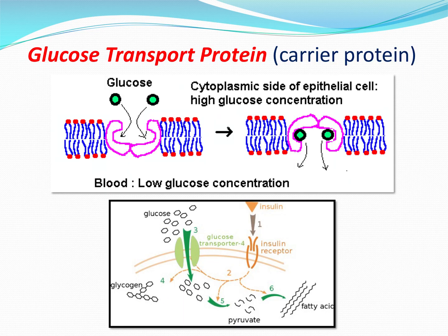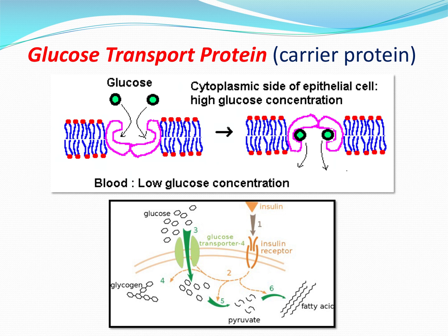An example of a carrier protein is how glucose moves through. Glucose is a bigger molecule — a type of macromolecule — so it moves through with a carrier protein, like a drawbridge. The protein channel is open to the outside, the glucose comes in, and it turns to allow the glucose inside the cell. There are receptors that signal when glucose is needed. Remember, this is still facilitated diffusion — not active transport — because glucose is small enough that it doesn't need extra energy; it can move based on its concentration gradient.